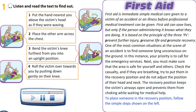To place someone in the recovery position, follow the simple steps shown on the left. Step 1: Put the hand nearest you above the victim's head as if they were waving. Step 2: Place the other arm across the chest.